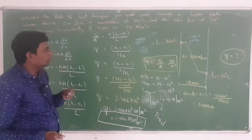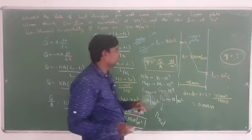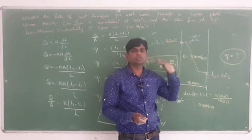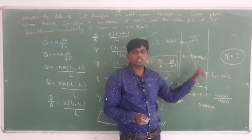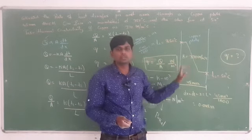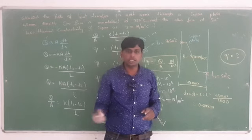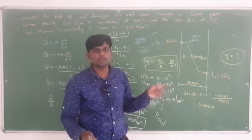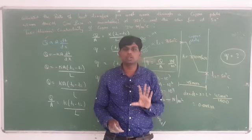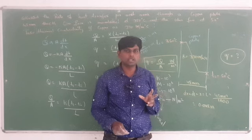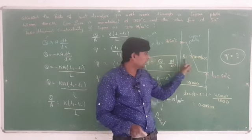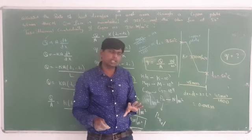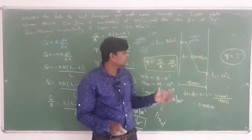Two temperatures are given: 350 degrees on the higher side (T1) and 50 degrees on the lower side (T2). K is the thermal conductivity of copper. If K is not given in the question, it is available in the data book, which is allowed in your examination. K here is 360 watt per meter centigrade.